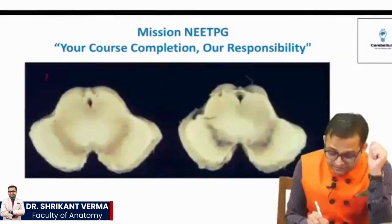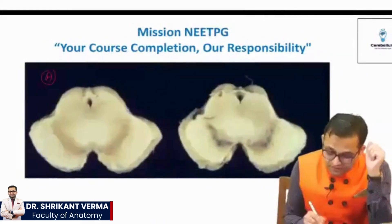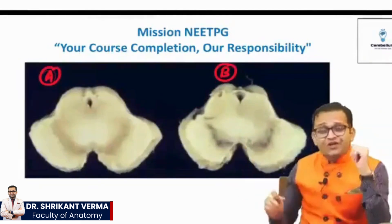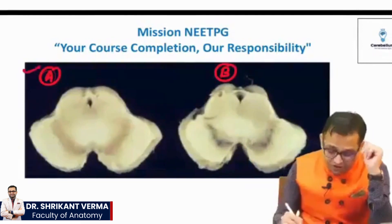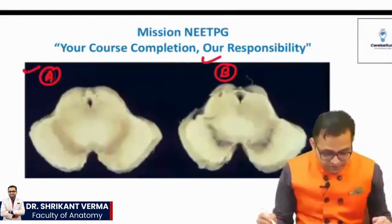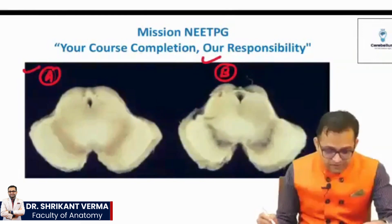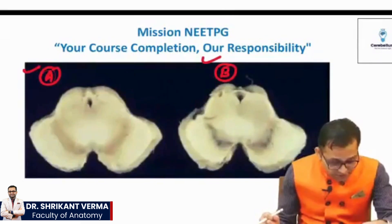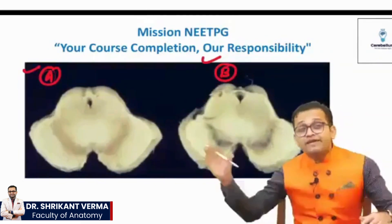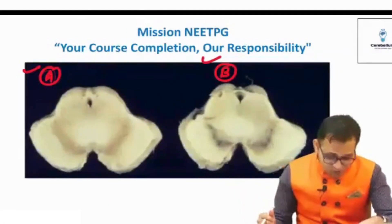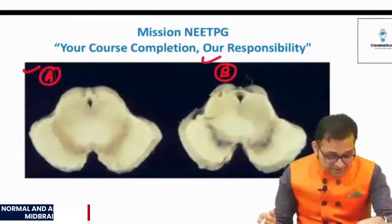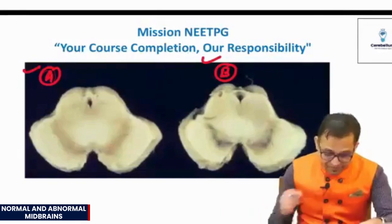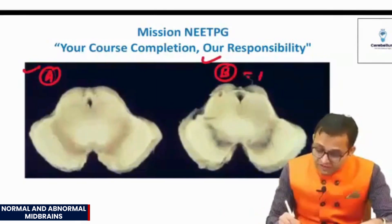There are the two midbrains — A and B. Tell me, which midbrain do you require in your body, A or B? Which is good? You all are saying B. Anyone who requires A? No, no, no — one is abnormal and the other is normal. The B is normal.